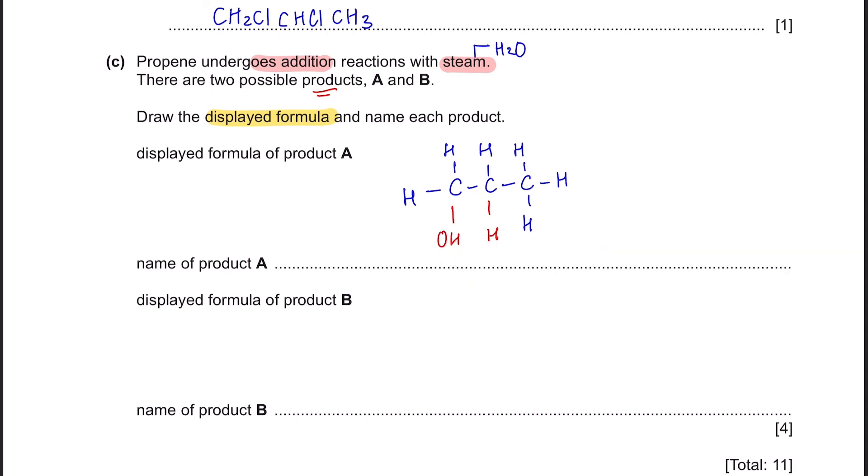You could have a propanol that looks like this, and we name this as propan-1-ol. Or another type of propanol which looks like this, whereby the functional group is attached to the second carbon. So we can name this as propan-2-ol.